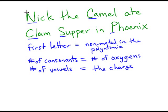Let's try an example. The N gives us nitrogen. There are three consonants, so we have three oxygens, and there's one vowel, so the charge is negative one. The C in 'camel' becomes our nonmetal. There are three consonants, so there are three oxygens. And there are two vowels, so the charge is two negative.